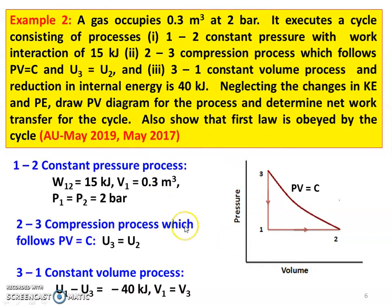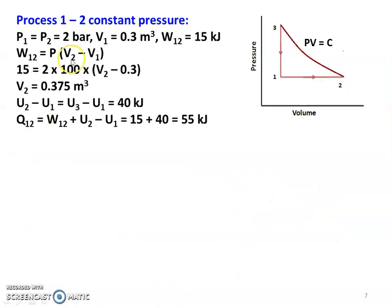On the PV diagram: 1 to 2 is constant pressure, 2 to 3 is PV equal to constant, 3 to 1 is constant volume. Given: W12 equal to 15 kilojoules, V1 equal to 0.3 meter cube, P1 equal to P2 equal to 2 bar. For the second process, U3 equal to U2. For the third process, U1 minus U3 equal to minus 40 kilojoules, so V1 equal to V3. For process 1 to 2, W12 equal to P into (V2 minus V1): 15 equals 2 into 100 into (V2 minus 0.3), giving V2 equal to 0.375 meter cube.